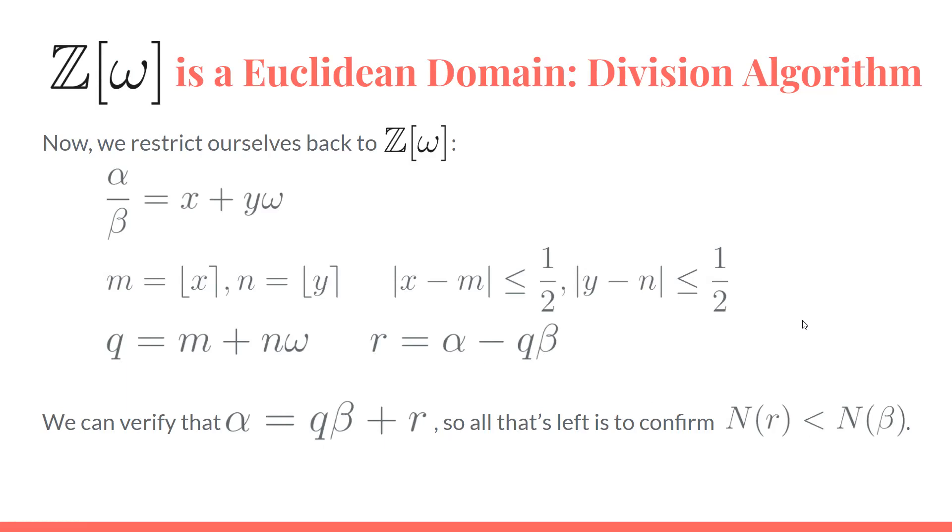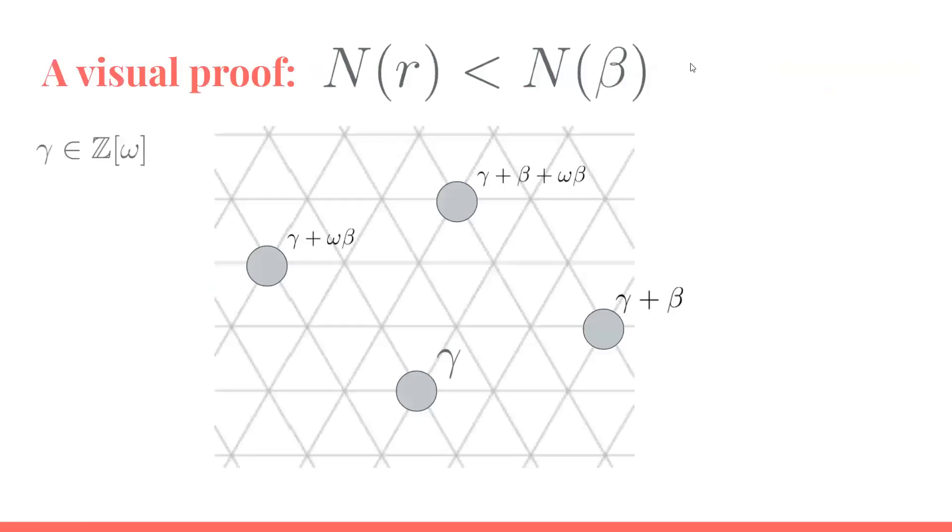We can do this with a visual proof by looking at the triangular lattice on the complex plane. Let's choose some γ and place that point here. Let's look at this parallelogram that we can create. If we assume β is here, then γ + β would land you here, and γ + ωβ would be over here.